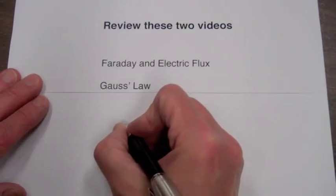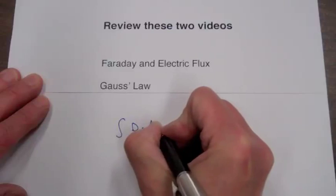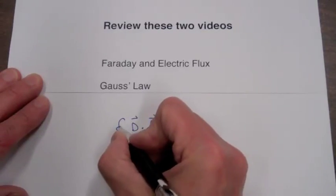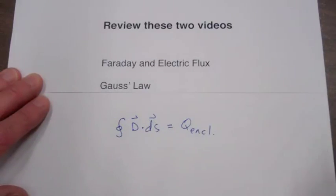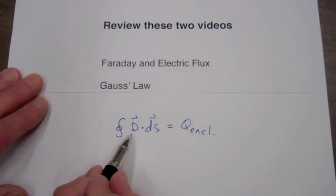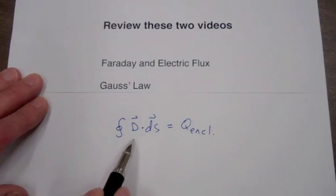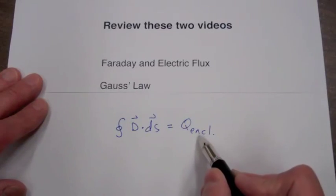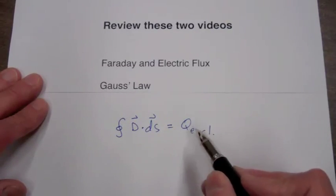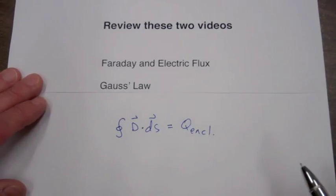Gauss's law in integral form is the integral of D dot dS over a closed surface, equal to the charge enclosed by that surface. D is the electric flux density field, so the integral of D dot dS over a closed surface tells us how much electric flux is coming out of the surface. Since positive charge is a source of electric flux, the integral of D dot dS tells us how much charge is enclosed.